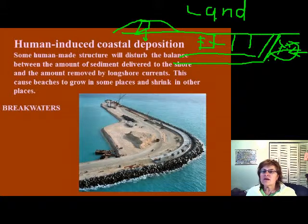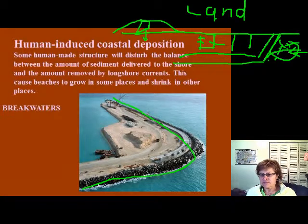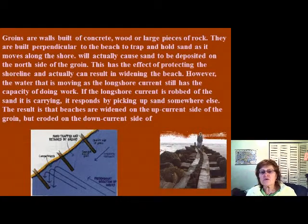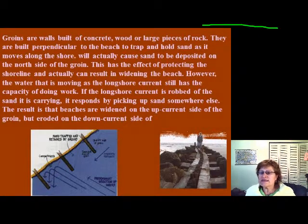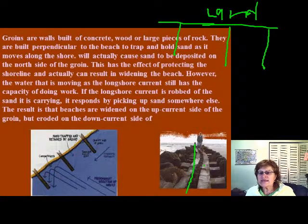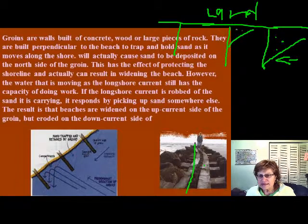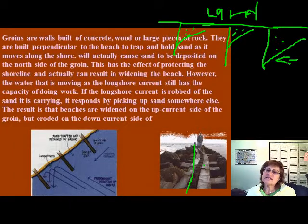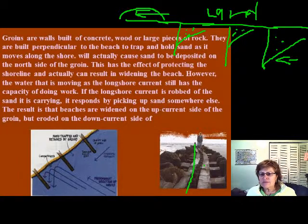The next structure is the groin. Groins are sea walls built in areas of intensive beach erosion where people need more sand. They are placed perpendicular to the shore, and the longshore current builds up sand on the upstream side. However, this causes major erosion on the downstream side. So sediment accumulates on one side of the groin while erosion occurs on the other.